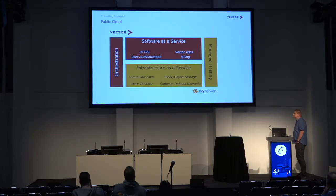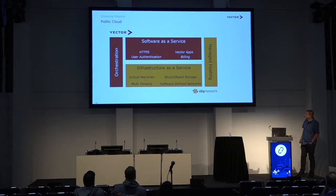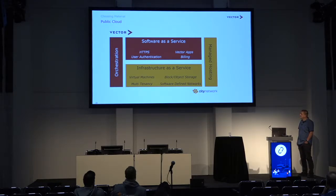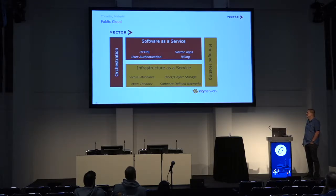The public cloud we are using is provided by a Swedish company also present at the summit — City Network, residing in Karlskrona. They provide infrastructure as a service: virtual machines, multi-tenancy, storage and networks, but also managed hosting. Managed hosting means they are trained in operating our Heat stacks and Ansible playbooks in order to set up and support our infrastructure and applications. We have provided the software-as-a-service layer on top, doing HTTPS to end clients, providing user authentication, the payload and billing, and we have set together all the orchestration.